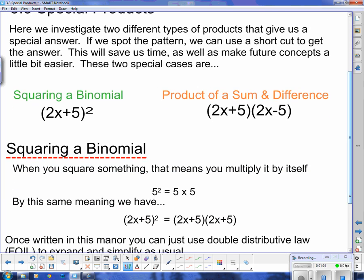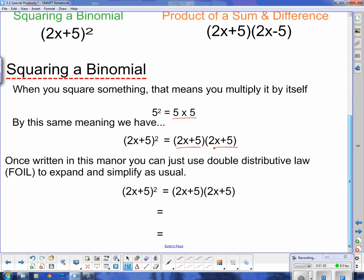So squaring a binomial. When you square something we know what that means. You multiply it by itself. So five squared means five times five and that's exactly the same meaning when you're talking about a binomial. If I have a bracket with a square on it that means that what I really want to do is multiply those two brackets together. Now if we do that using FOIL or the double distributive law that we learned in the last lesson, it's very straightforward.